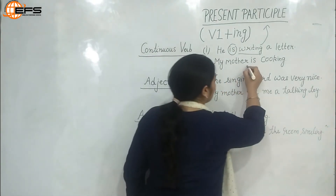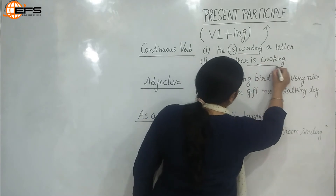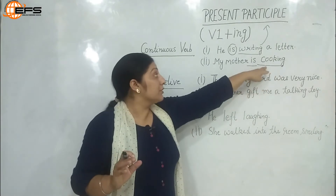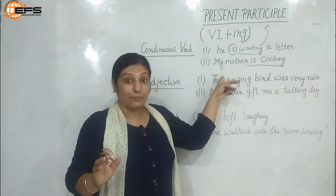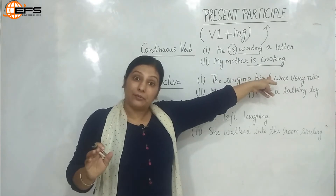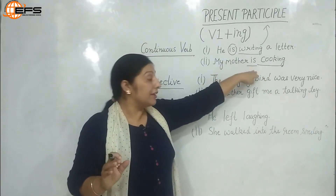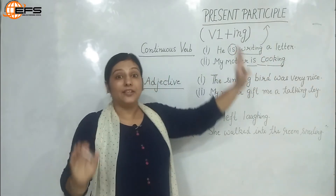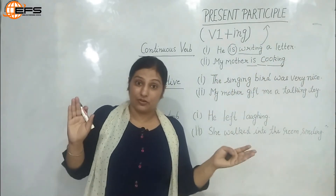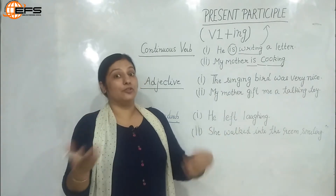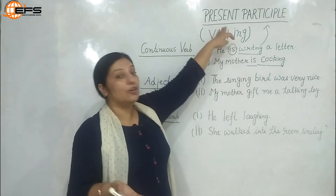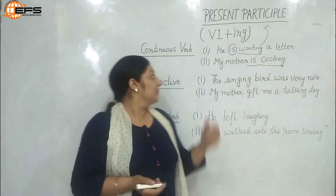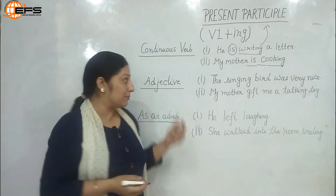'My mother is cooking' — here 'is' is the finite verb and 'cooking' is the example of present participle. You just need to remember that the -ing verb will not change even if we change the subject. If I say 'her mother is cooking' — 'cooking' remains the same. If I say 'they are cooking' — 'cooking' still does not change. So the -ing verb in continuous structure, whether past or future, will always be called present participle.